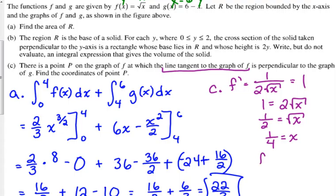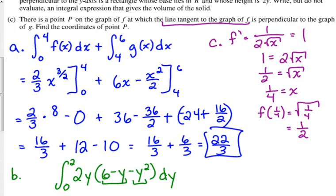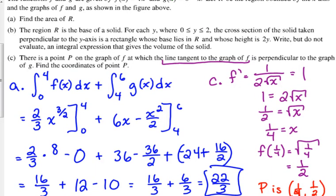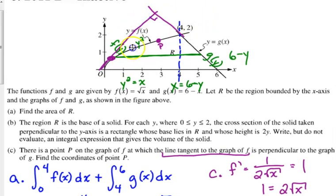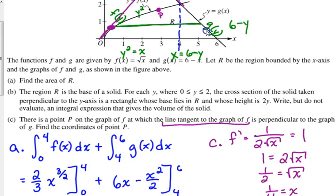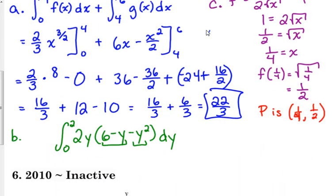We go back to the original. What is F of 1 fourth? That's the square root of 1 fourth, which is 1 half. So P is 1 fourth, 1 half. I was correct when I backed my plane up to be closer to the X and Y axis. That is more of where that tangent line would be perpendicular to G.